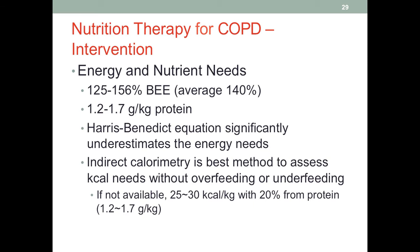To estimate energy and nutrient needs for COPD patients, we will take into consideration the increased energy expenditure. Protein requirements are much higher for COPD than in healthy adults — the healthy adult standard is 0.8 grams per kilo, whereas for COPD it could be as high as 1.7 grams per kilo, which is more than twice as much.